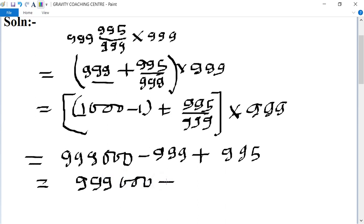999000 minus 999 plus 995, so equal to - the difference is 998996, which is the required answer.